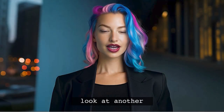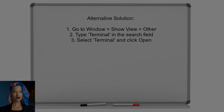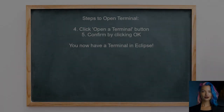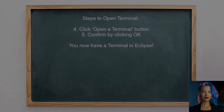Let's take a look at another approach. An alternative way to run a system shell in Eclipse is to open the Terminal View. Go to the Window menu, then select Show View and choose Other. In the dialog that appears, type Terminal in the search field, select it, and click Open. Once the Terminal View opens, look for the button labeled Open a Terminal in the top right corner. Click it, and a dialog will appear — simply click OK, and you will have a Terminal ready to use.